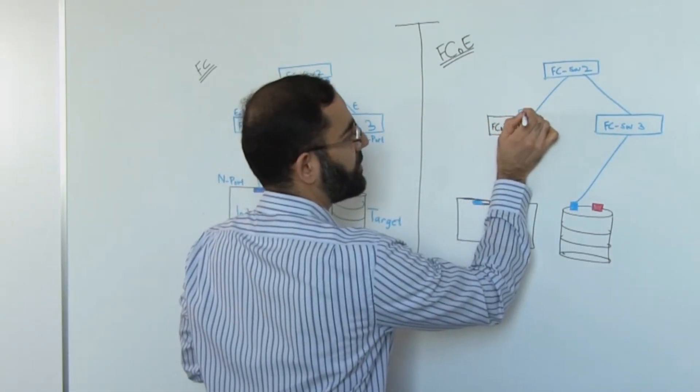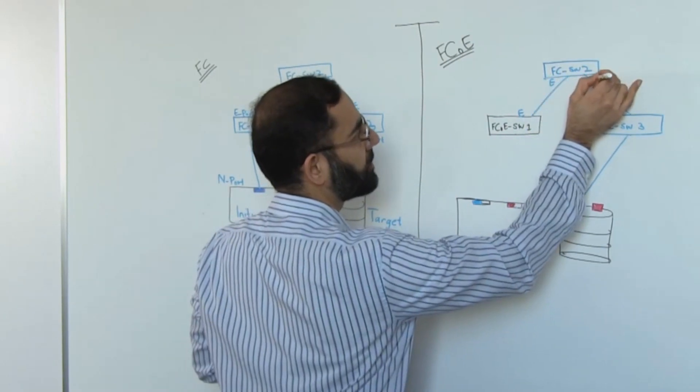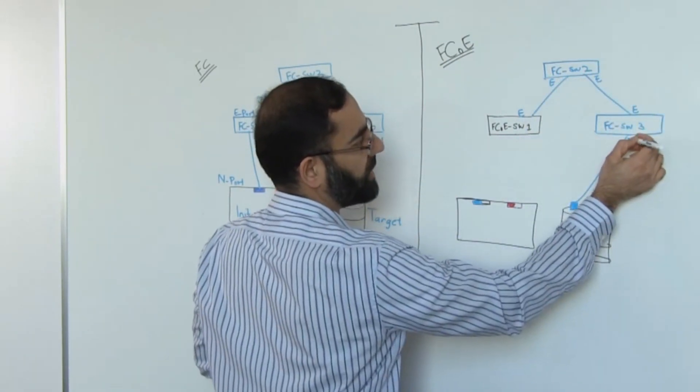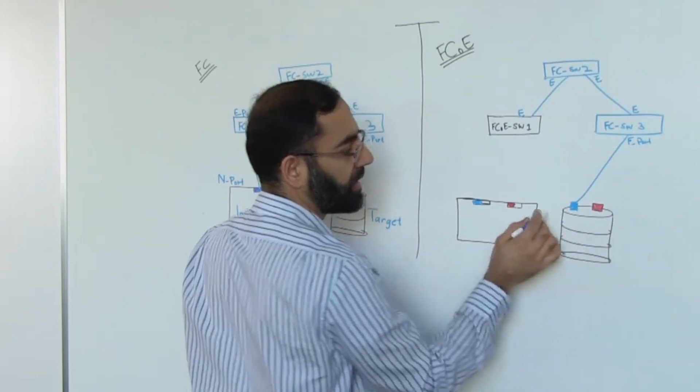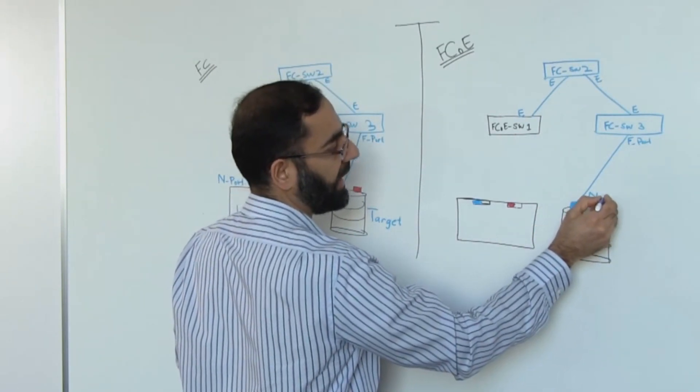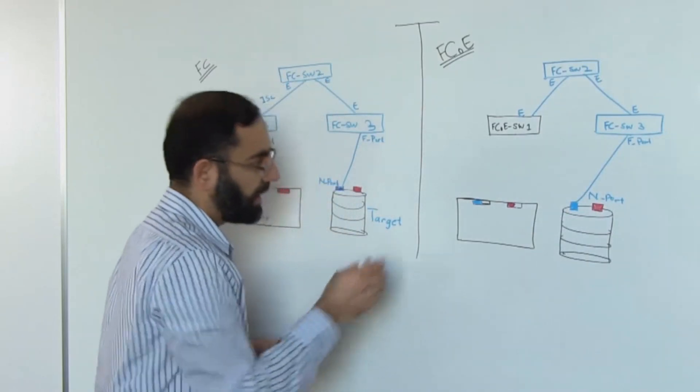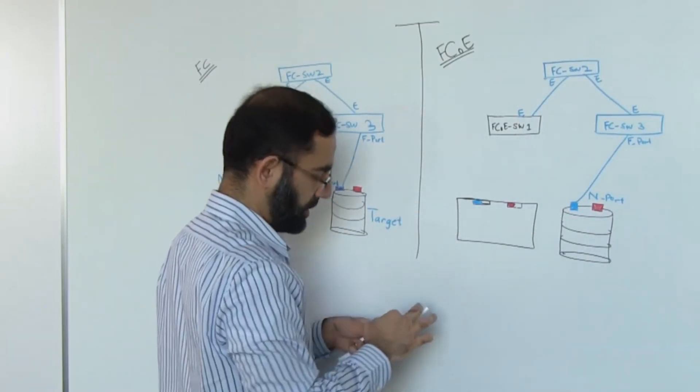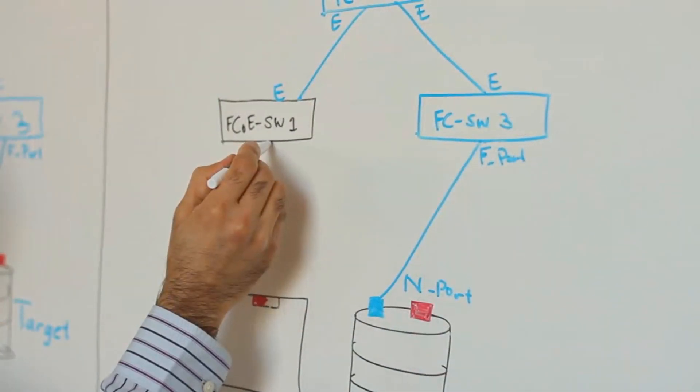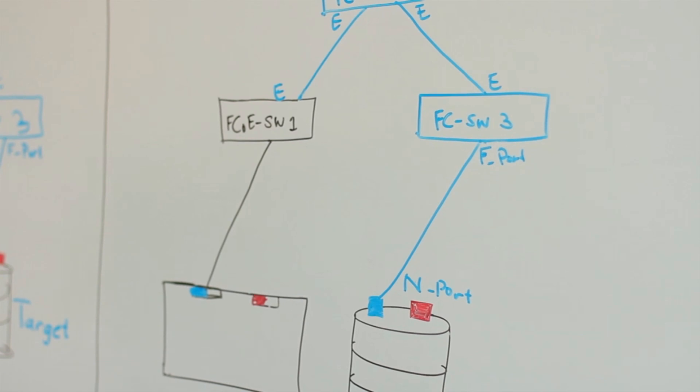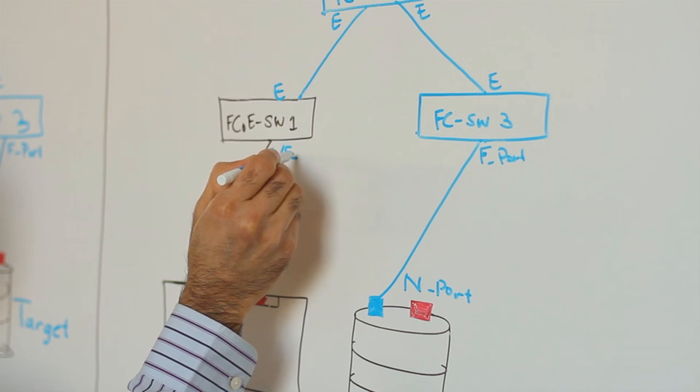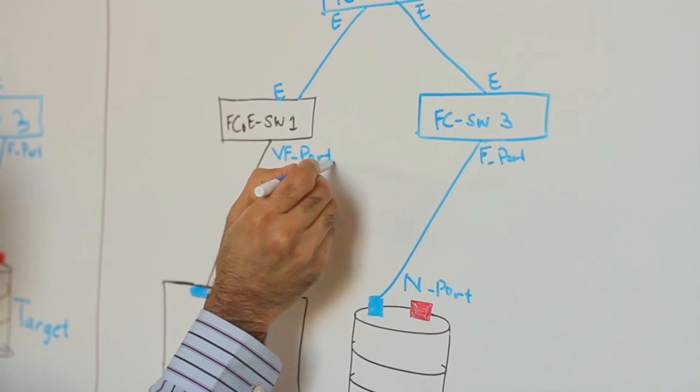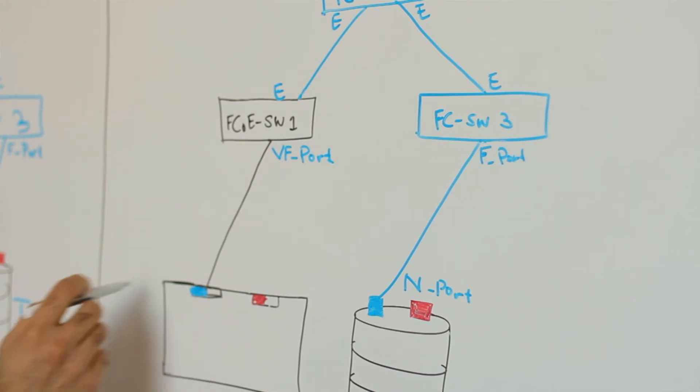These ports will be referred to as E ports. This port just like in previous example will be called an F port. This port like in previous example will be called an N port. However, this link between server CNA and FCoE switch will have a slightly different name. This port which is connected to the server is going to be called a VF port and the CNA port will be referred to as VN port.